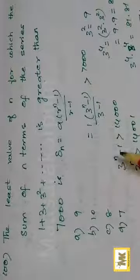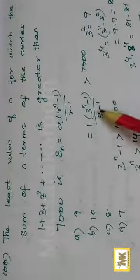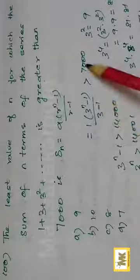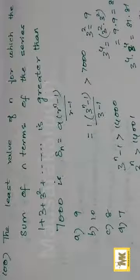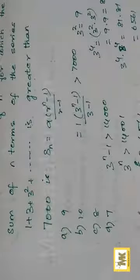So 3 to the power n minus 1, separate the 2, cross multiply to get 14000. 3 to the power n greater than 14001.